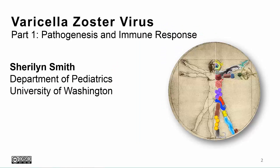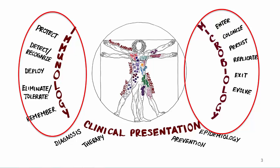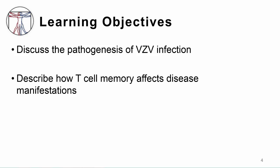Hi, I'm Sherilyn Smith, a pediatric infectious disease doctor at the University of Washington. In this video, we'll be talking about varicella zoster virus, or VZV, an important viral pathogen that has unique clinical characteristics. We'll explore how VZV causes disease, how the immune system works to control infection, and what happens when the immune system isn't effective. The learning objectives are to discuss the pathogenesis of VZV infection and describe how T cell memory affects disease manifestations.